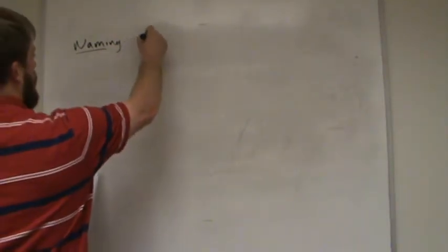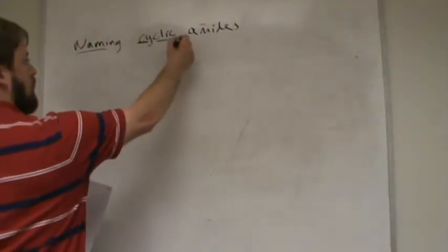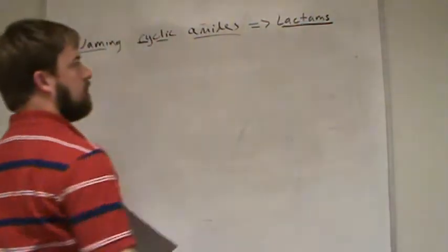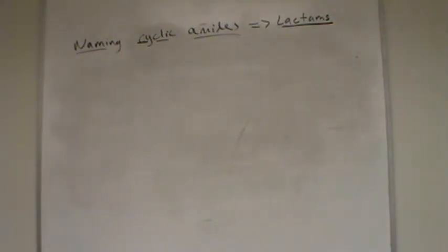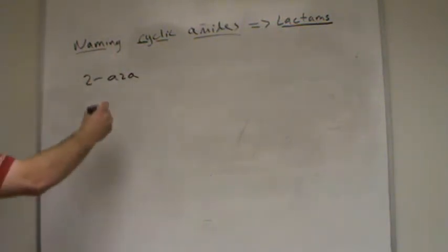So just like we had cyclic esters, we can also have cyclic amides. So naming cyclic amides. The ester version was called lactones. Cyclic amides are called lactams. With esters, kind of the root word was 2-oxa, right? Here it's going to be 2-aza. 2-aza instead of oxa. Aza indicates nitrogen.